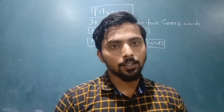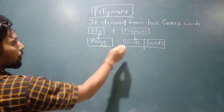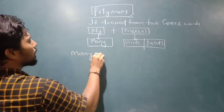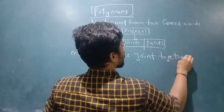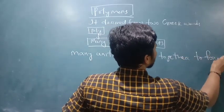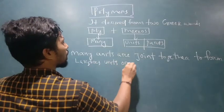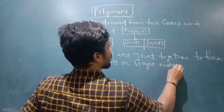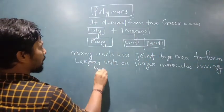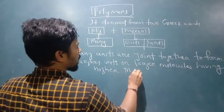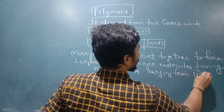The word polymer is derived from the Greek: poly means many, moros means units. Many units are joined together to form larger units or larger molecules having higher molecular masses ranging from 10 to the power 3 to 10 to the power 7 dalton or unified mass.